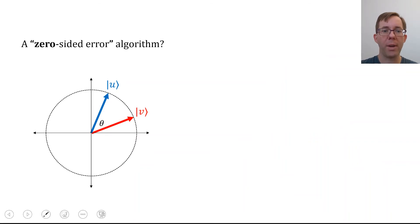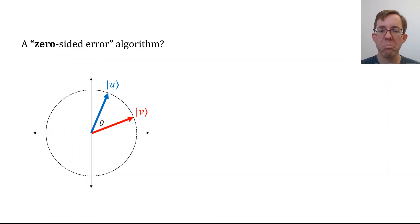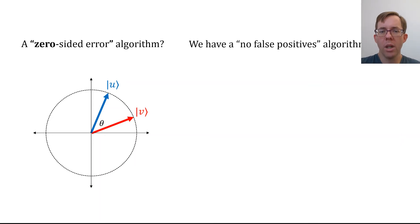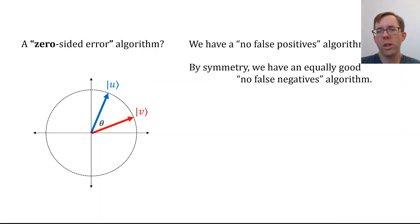What about zero-sided error? This algorithm has three possible outputs: guess u, guess v, or say 'I don't know' — and 'I don't know' is the error. Zero-sided means you're never allowed to be wrong: if you guess u, it really must be u, and if you guess v, it really must be v. You're trying to minimize the probability of saying 'I don't know.' By symmetry, we can have a no-false-negatives algorithm by measuring in the v and v-perp basis. We now have two one-sided error algorithms, and we can combine them into a zero-sided error algorithm.